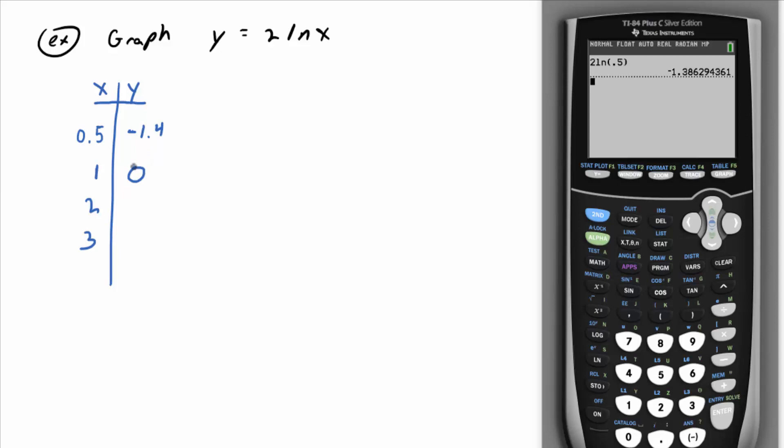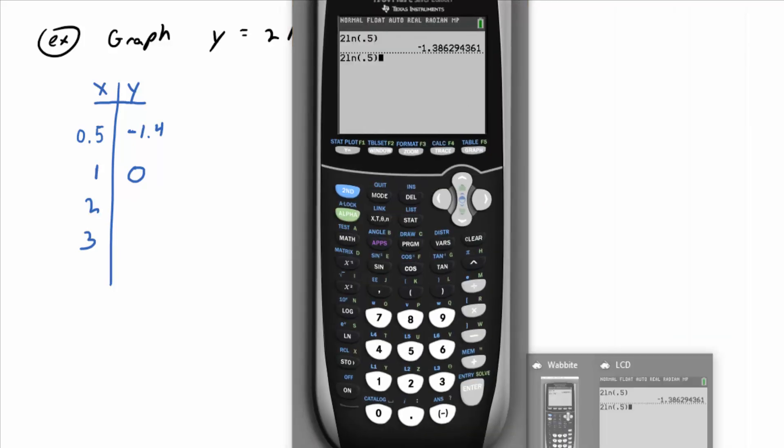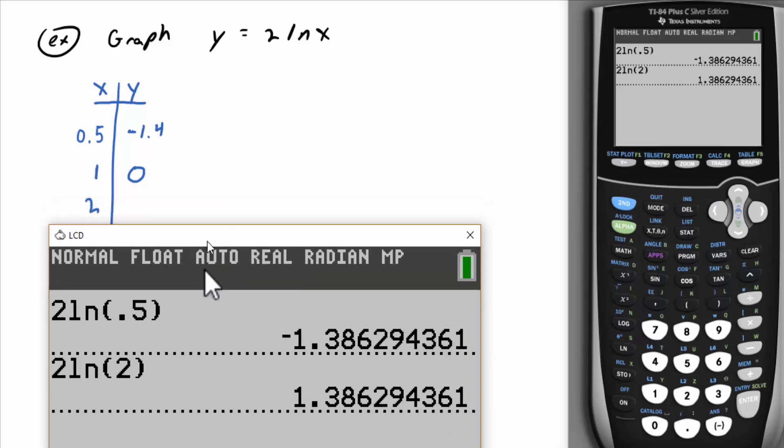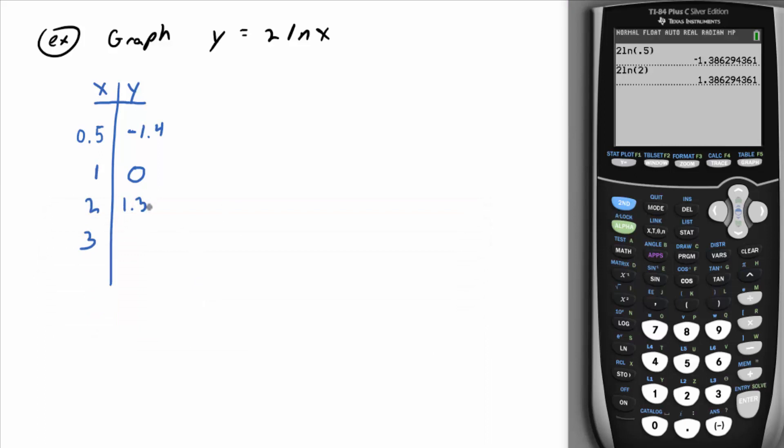And then if you plug in two, you could just hit second function, enter and replace. Let me get the big screen up. And you could replace the 0.5 with two about positive 1.38. So 1.4. And then you could hit second function, enter and replace the two with the three. Looks like you get about 2.2 approximately.